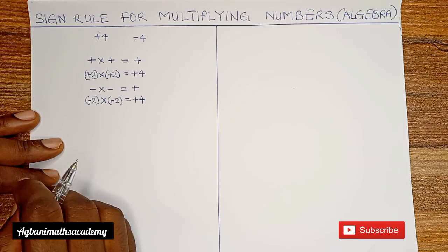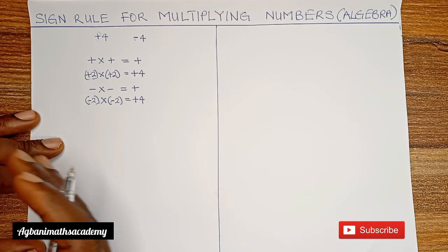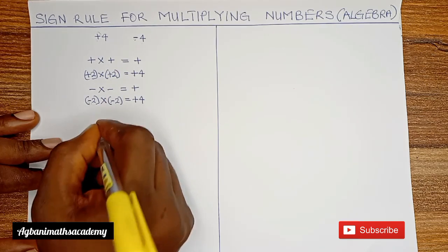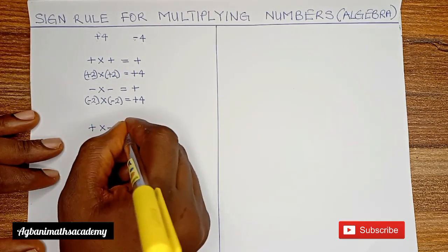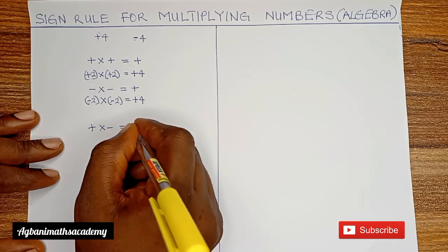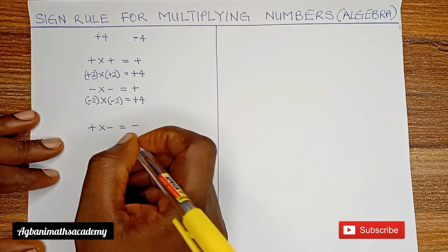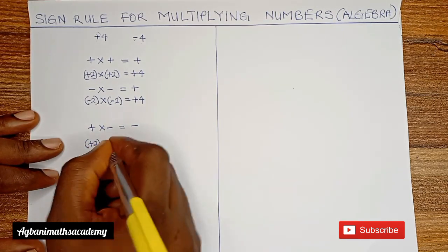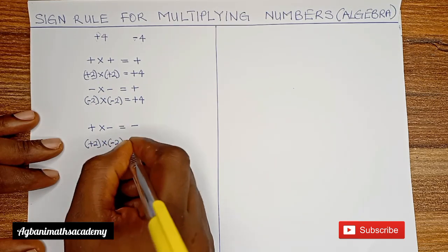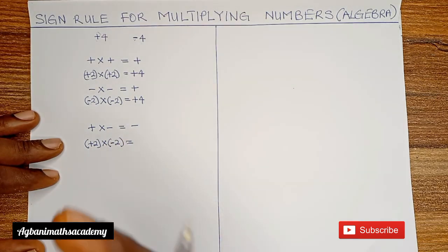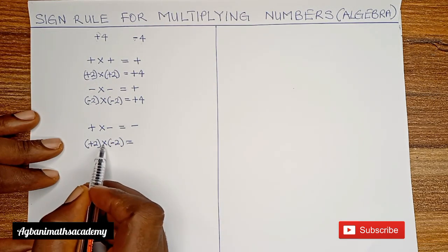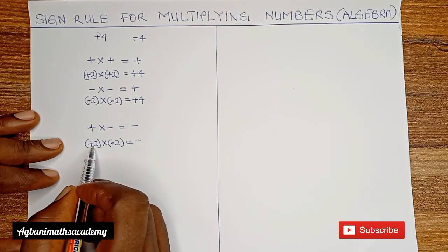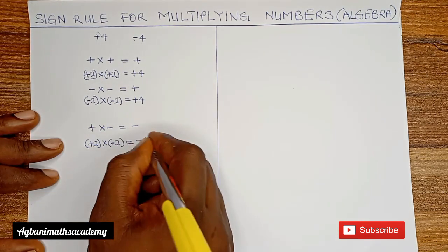Let's look at a situation where we have a positive number multiplying a negative number. Plus multiplied by minus gives a negative answer. For example, plus 2 multiplying minus 2: first multiply the signs — plus multiplied by minus gives us minus — and 2 multiplied by 2 gives us 4.